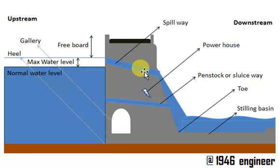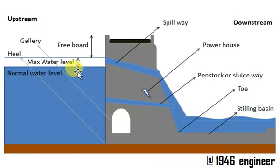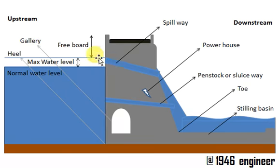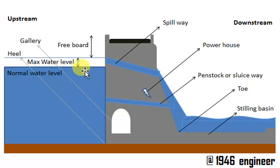The very first structure I am going to talk about is the spillway. A spillway is a structure which diverts excess water from the upstream side towards the downstream side safely. It acts as a pipe which diverts the excess water from the upstream side.